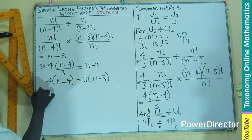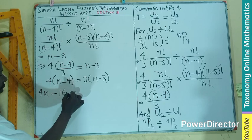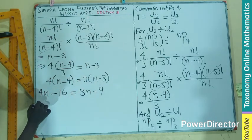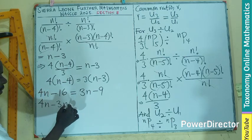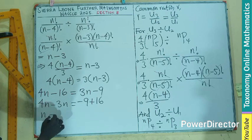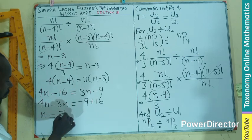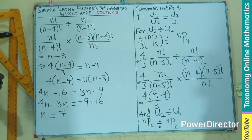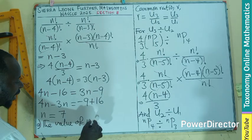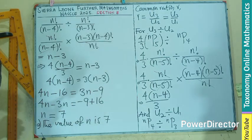Right here, you have 4n minus 16 equals 3n minus 9. Grouping of like terms will be 4n minus 3n equals negative 9 plus 16. So n will be equal to 1n equals 7. So this is what you are looking for. Therefore, for the first part, the value of n is going to be 7. That's the first part of it.